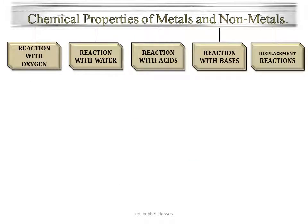Now we will study the chemical properties of metals and nonmetals. A chemical property is a property of a material that can be seen during or after a chemical reaction. We will discuss the properties of metals and nonmetals when they react with oxygen, water, acids, bases, and also displacement reactions.